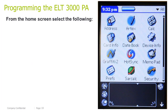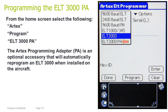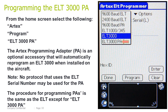Programming the ELT 3000 PA. From the home screen, select the following: Artex Program, ELT 3000 PA. The Artex programming adapter, or PA, is an optional accessory that will automatically reprogram an ELT 3000 when installed on the aircraft. Note: no protocol that uses the ELT serial number may be used for the programming adapter. The procedure for programming PAs is the same as the ELT, except for ELT 3000 PA. Aviation user, tail number short.